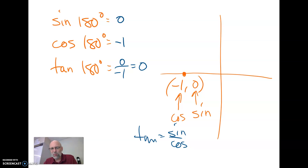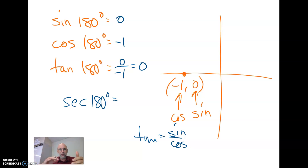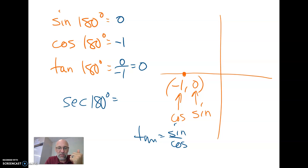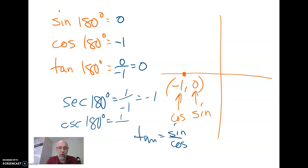What if we wanted their reciprocals? The secant of 180 degrees is the reciprocal of cosine. The cosine of 180 degrees is negative 1, so the secant is 1 over negative 1, which equals negative 1. The cosecant of 180 degrees is 1 over the sine. The sine is 0, so 1 over 0 doesn't exist — that is undefined.